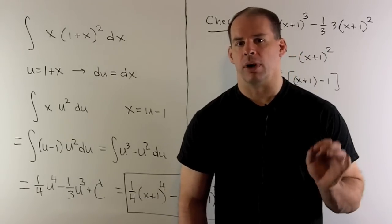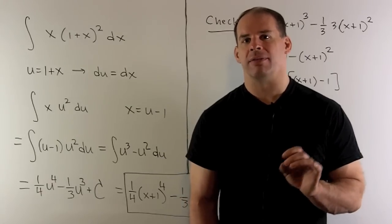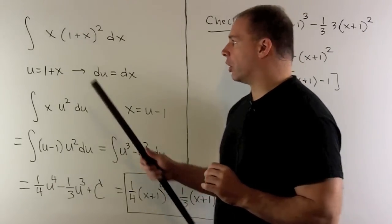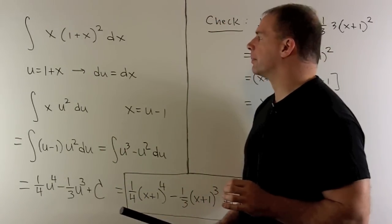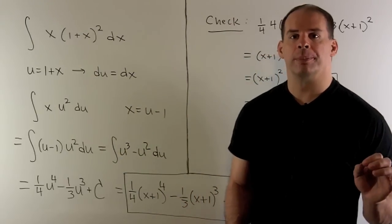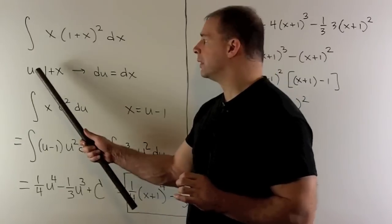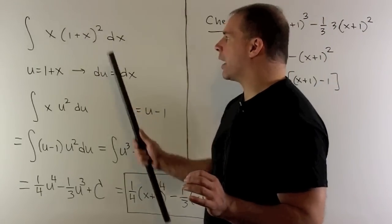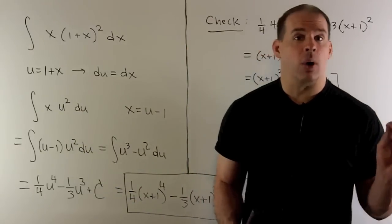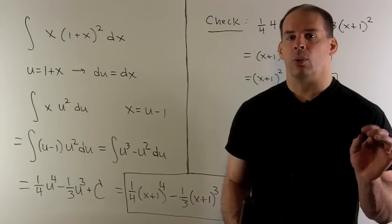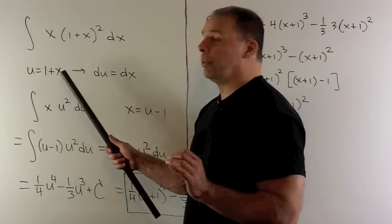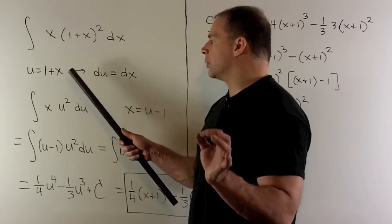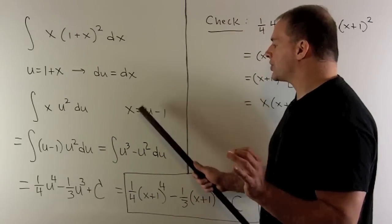For our final example, we're going to have a situation where after we substitute, we're still going to have x terms in our integrand — this will be the first step for how we repair that. We'll have the indefinite integral of x times 1 plus x squared dx. Here we have the composition 1 plus x squared, the inside is 1 plus x, so set it equal to u. Taking the derivative of both sides with respect to x gives du equals dx. Substituting in, I have a u squared and a du — but note that x does not go away. There is a way to write x in terms of u, so that's our next step. Going back to our substitution equation, we get x equals u minus 1.